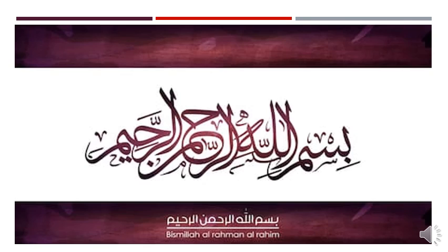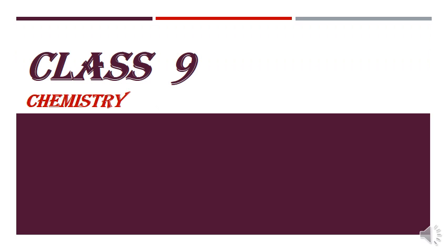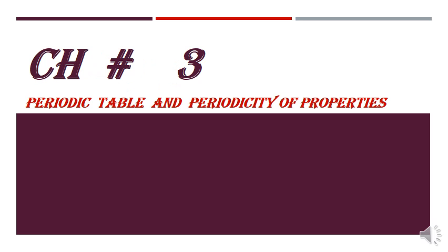My name is Mahir Fumannir Raheem, Class 9. Now we are going to study chemistry, chapter number 3. The name of this chapter is periodic table and periodicity of properties.